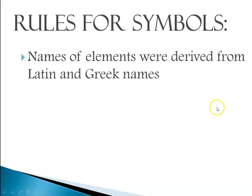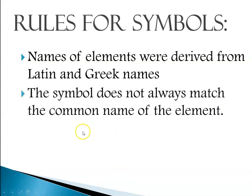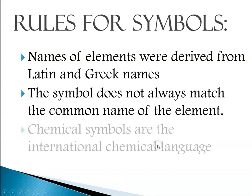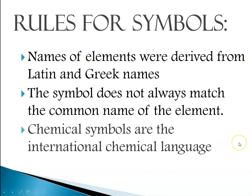The reason we use these symbols is that no matter where you are on planet Earth, we've all agreed to use the same symbols, and so we all have to follow the same symbol conventions. The names of the elements were derived from Latin and Greek names for the most part, so their symbols don't always match what the name is. Chemical symbols are the international chemical language, and so we all agree to the same ones.